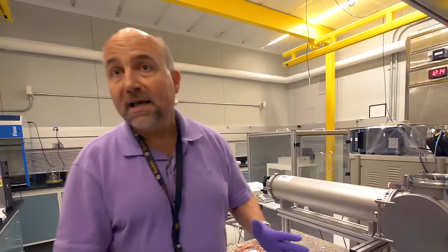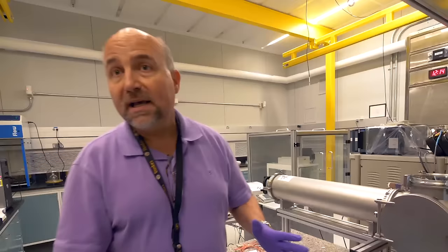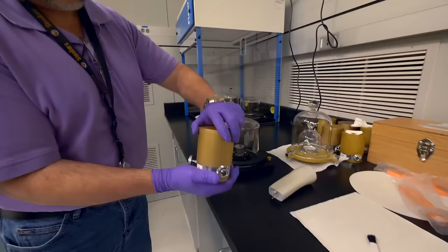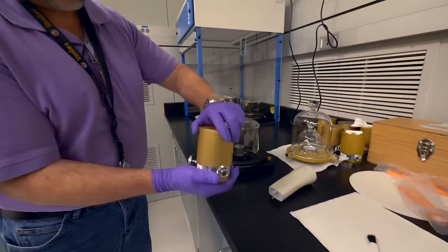The problem scientists are having with the kilogram now is much bigger than weather fluctuations. It's something they discovered when all the original kilograms were returned to Paris for a weigh-in including K20. How does it get there? It gets there by a person hand carrying it.